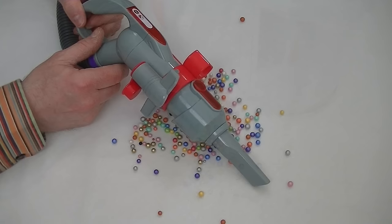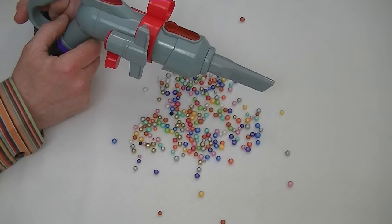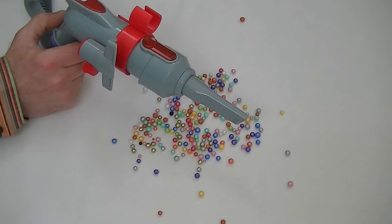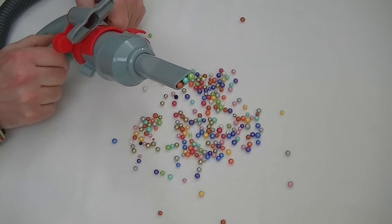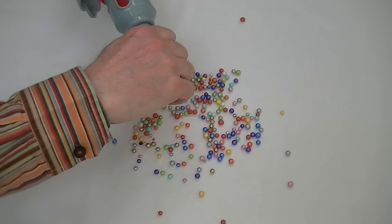Just like a real Dyson, you can connect any of the small tools directly onto the handle. So I've put on the crevice tool. Let's see if it manages to pick up any of these balls. Oh dear! Well, it looks like these particular polystyrene balls are a little bit too big for the crevice tool. There are some smaller ones mixed in here, but not many. That's a shame.